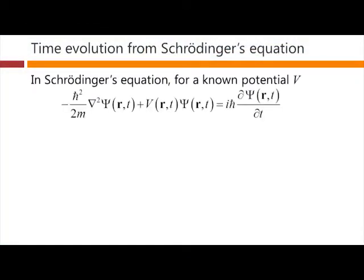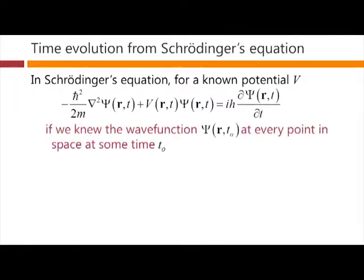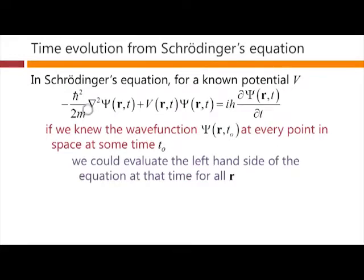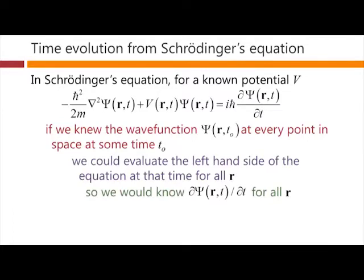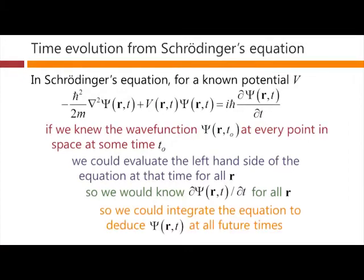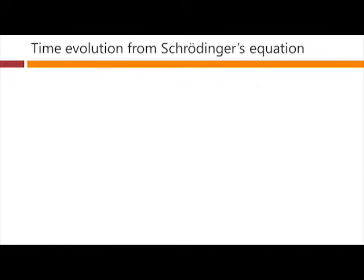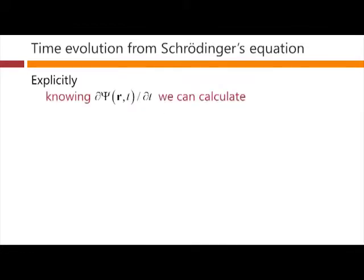Let's look at how this works. With Schrödinger's equation, if we have a known potential V of r and t, and if we know the wave function psi of r and t₀ — that's the wave function at every point in space at a specific time t₀ — then we can evaluate the left-hand side at that time for every position. And so we know the time derivative of the wave function at every position.